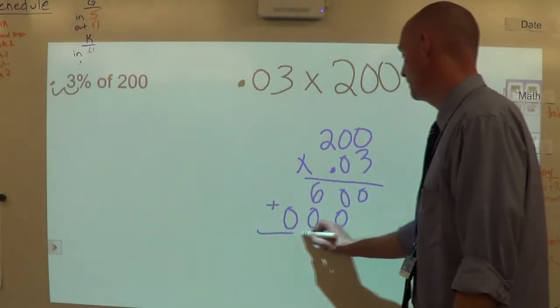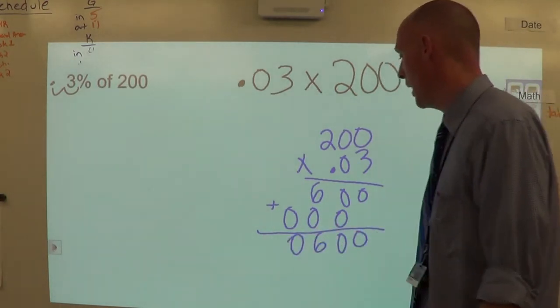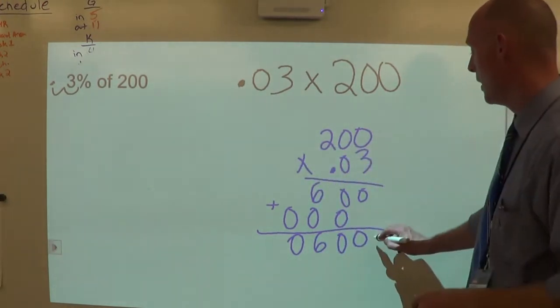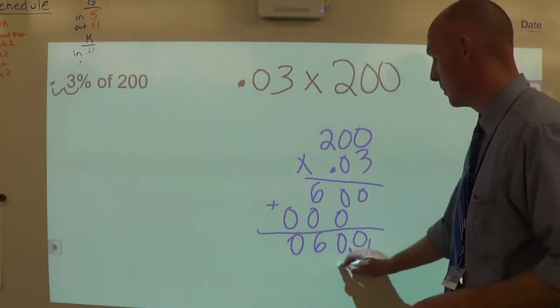Add them up: 0, 0, 6, 0. Next count the decimal places. I have none here, I have one, two here, so we're going to move it once, we're going to move it twice.